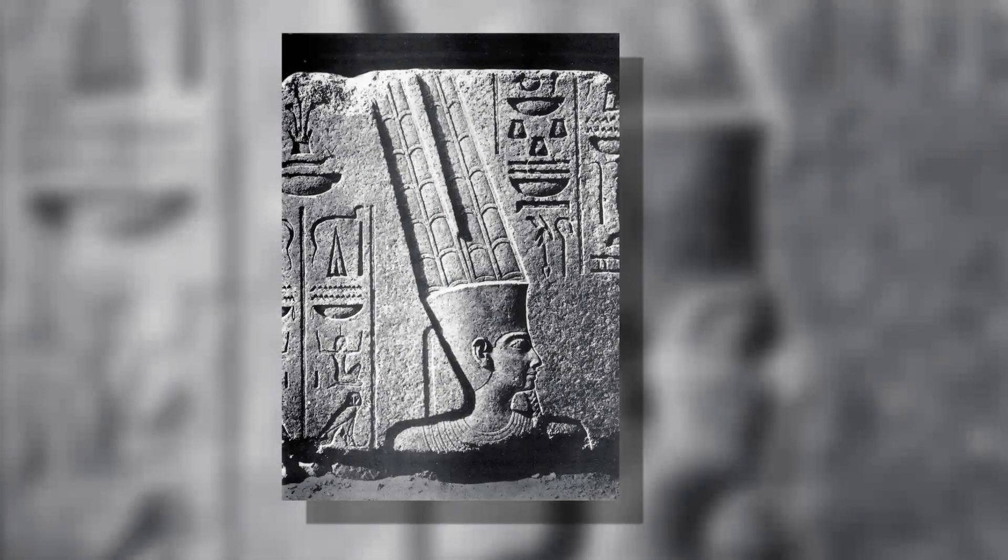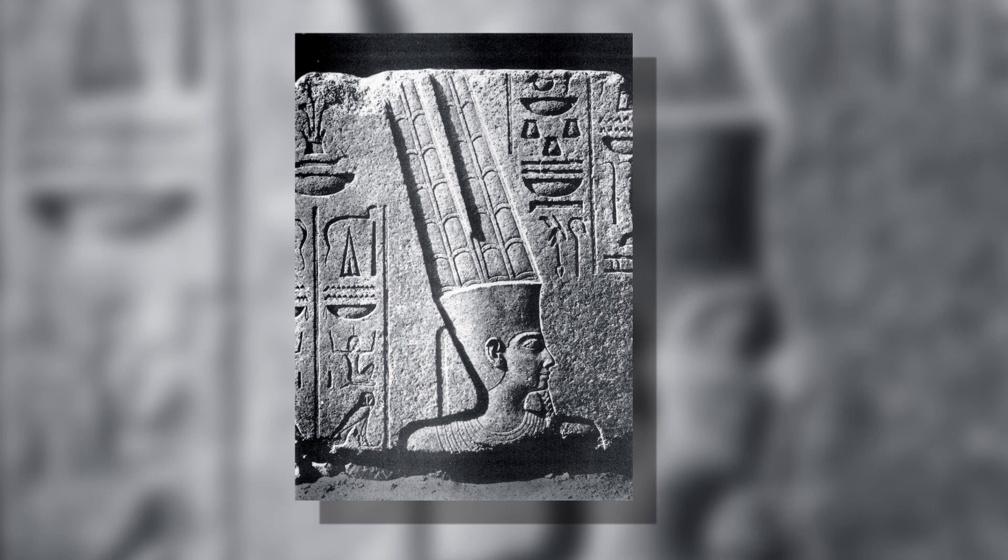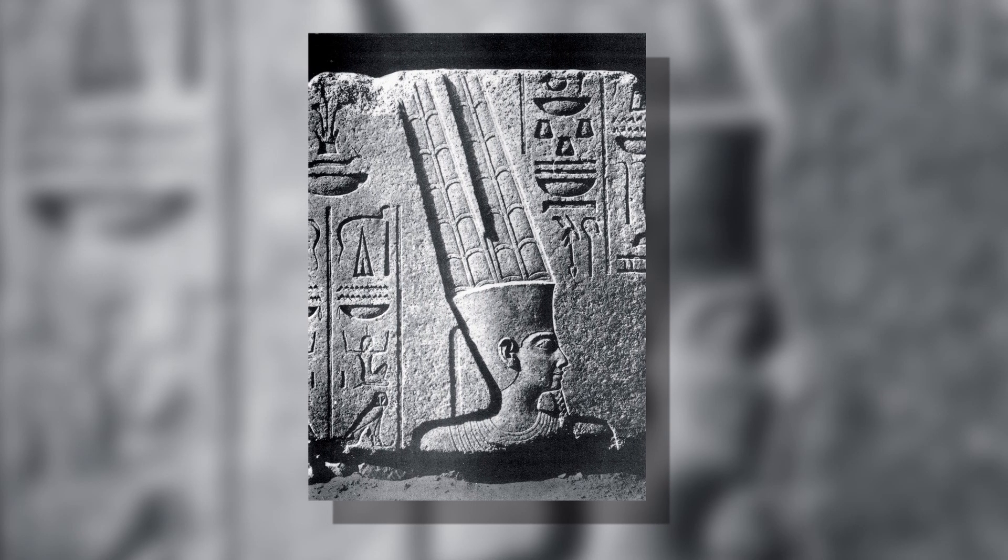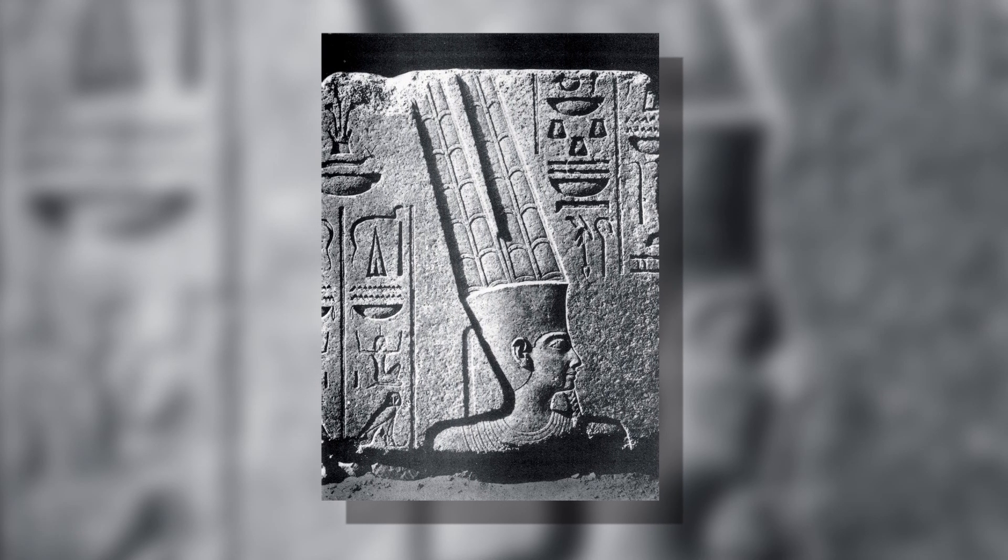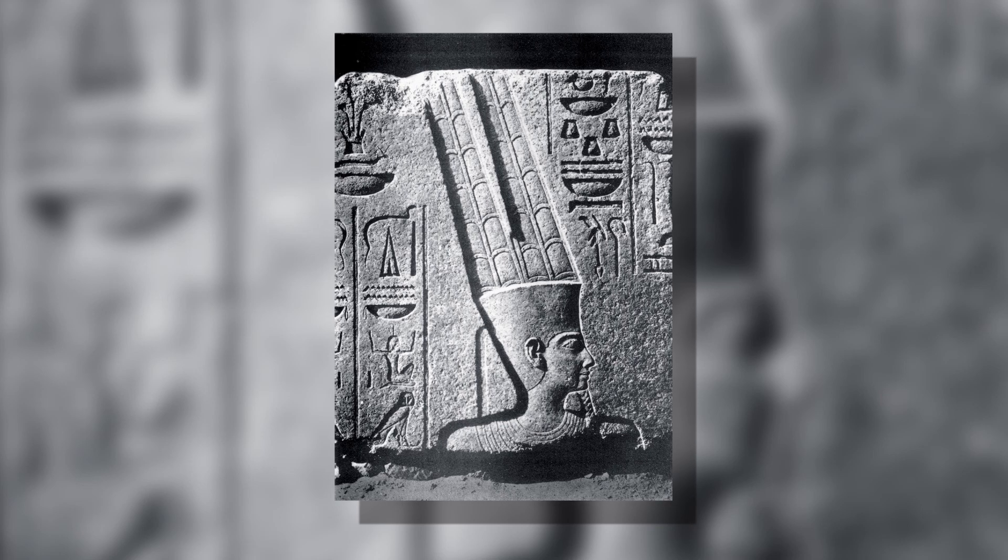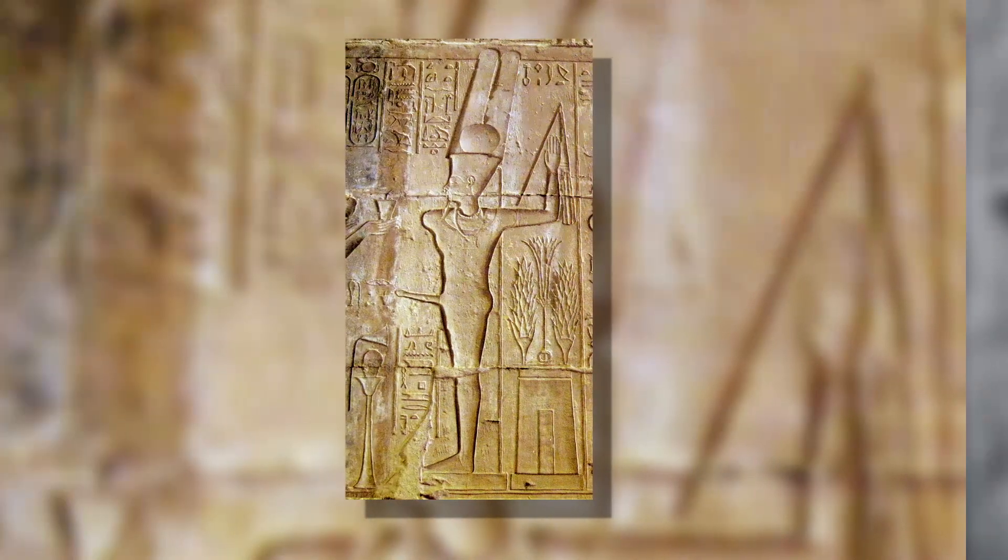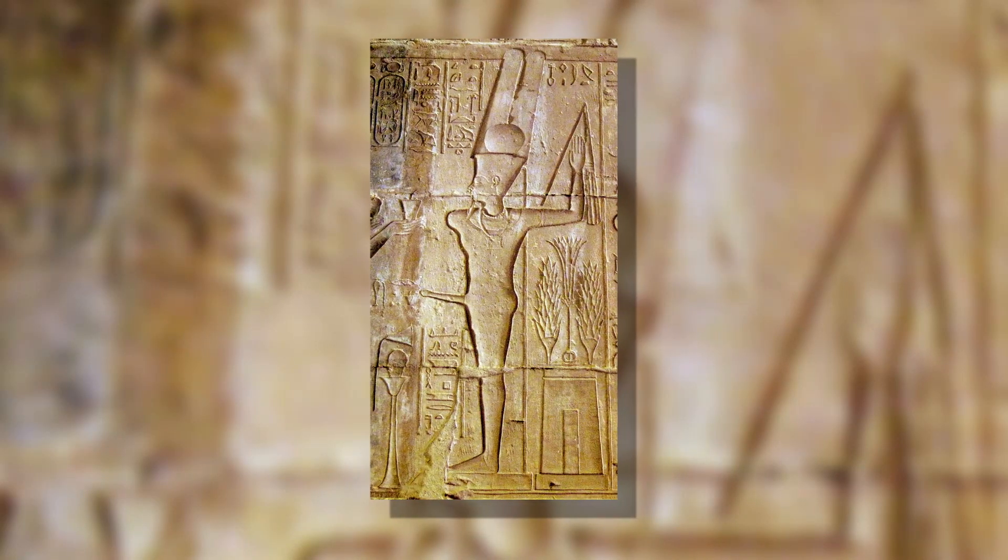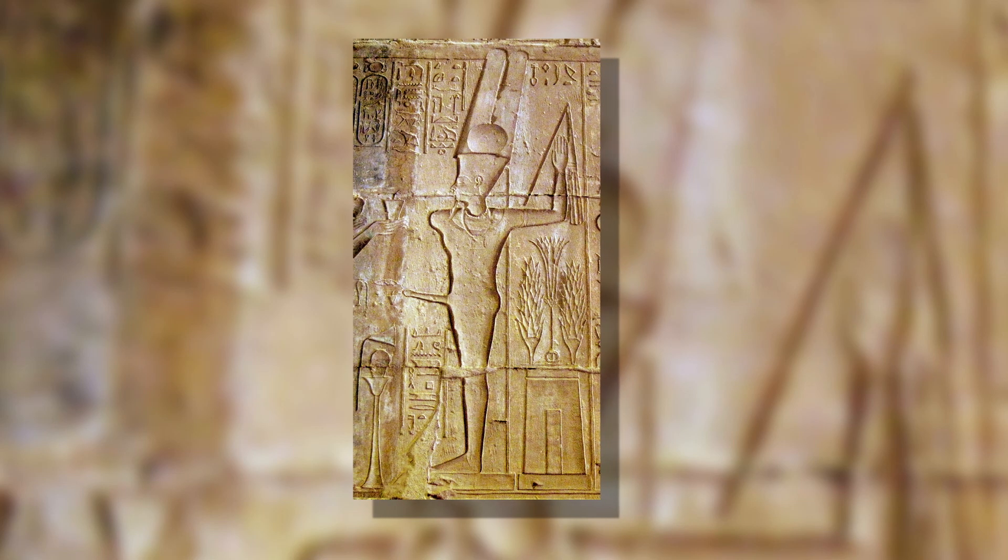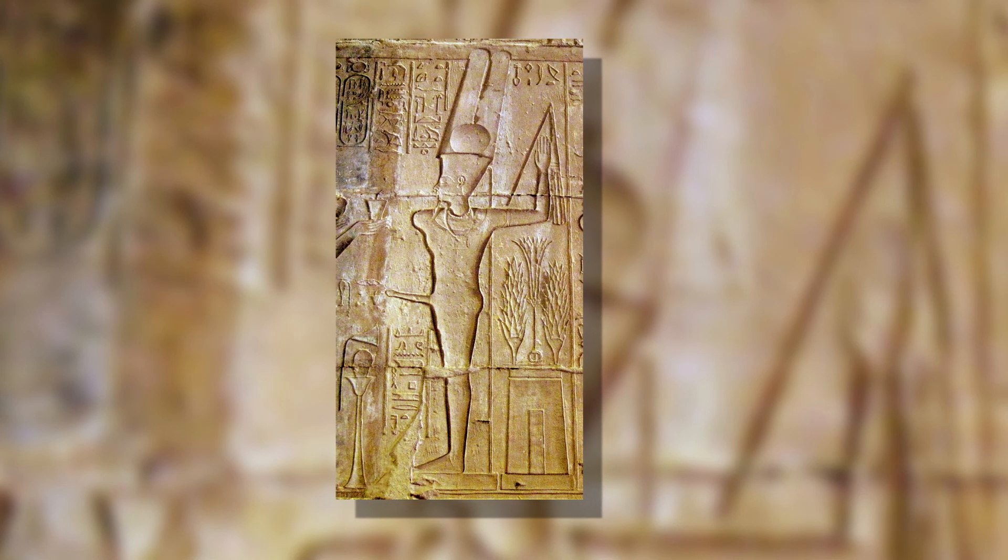In Egypt, Amun is the god who corresponds to Jupiter. He is believed to be the creator and king of the gods. He created the first couple among them. Legend has it that Amun is able to assume every shape and that all the other gods are only manifestations of himself.